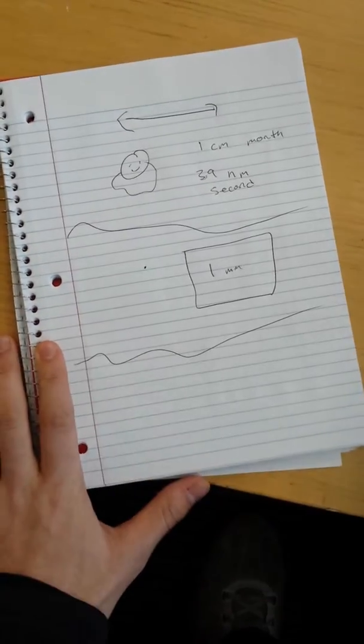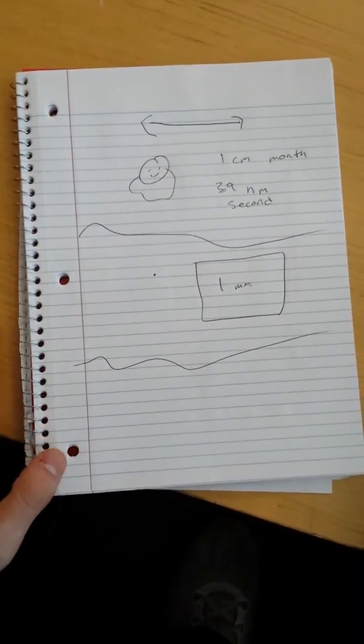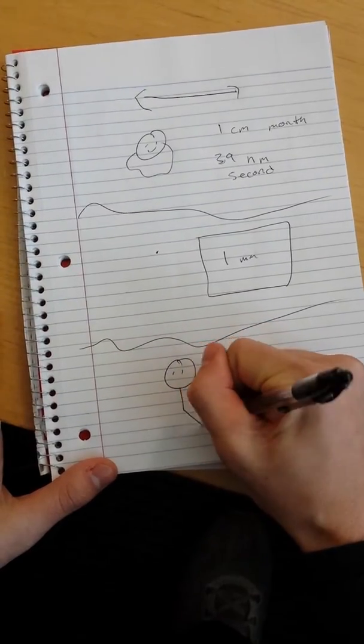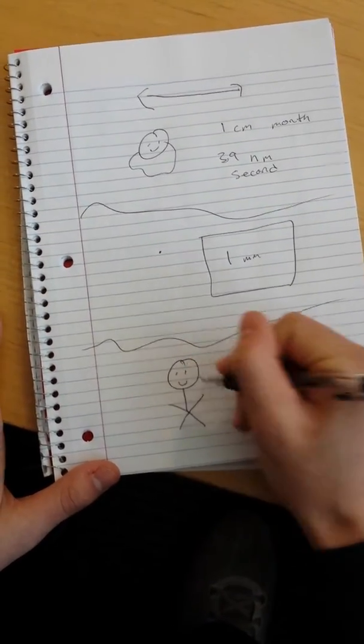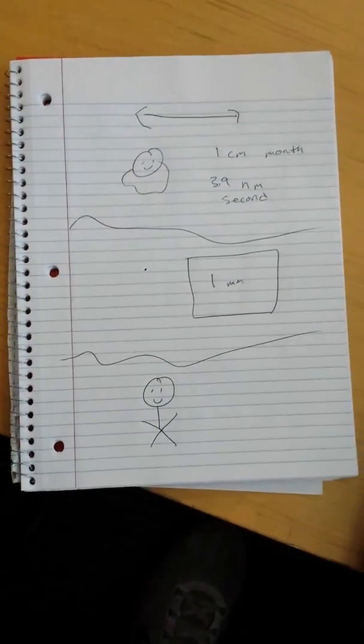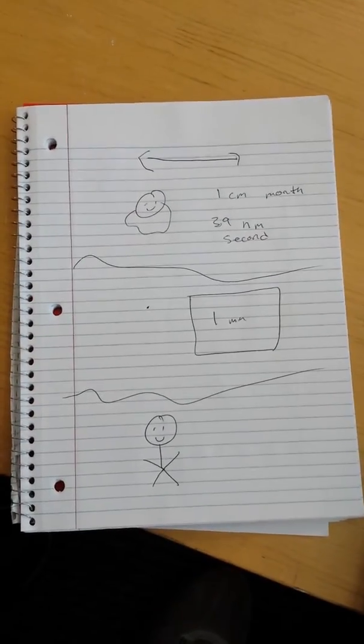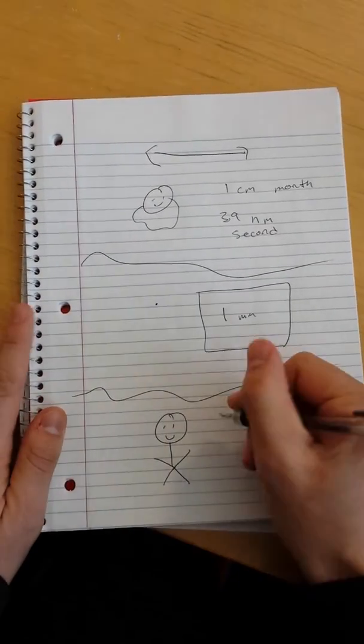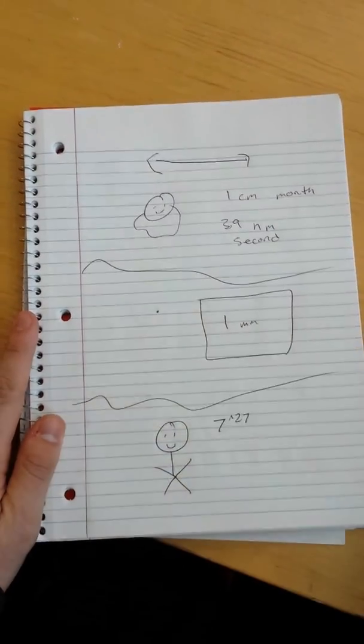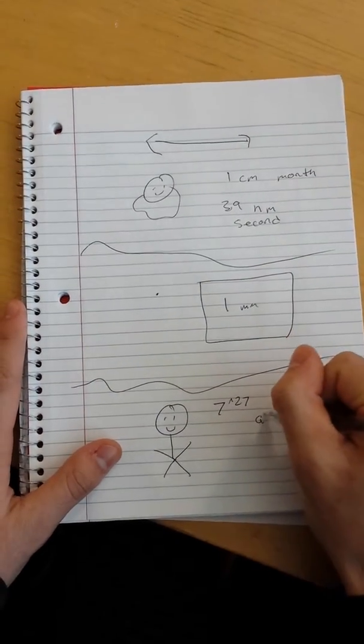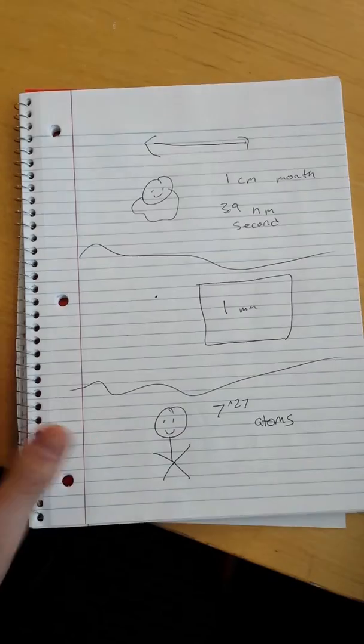So now let's talk about something that we're all familiar with. We know kind of exactly how big it is, and that's your average human being. So this can be the human. Very happy man. So how many atoms are in the human? And the human is going to be 7 raised to 27 atoms, which is so big.